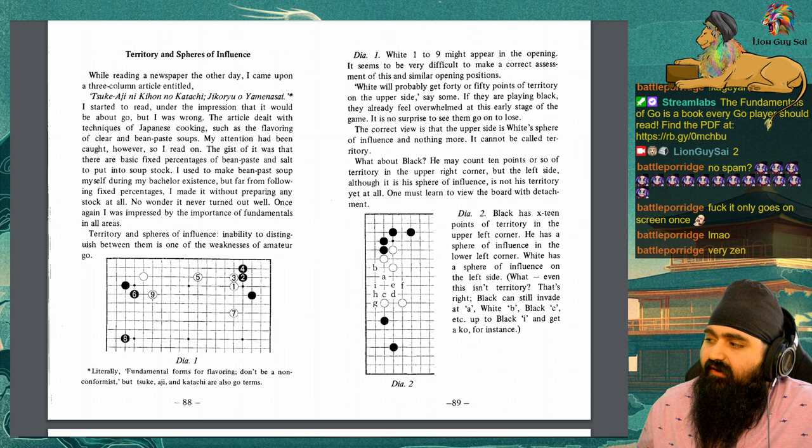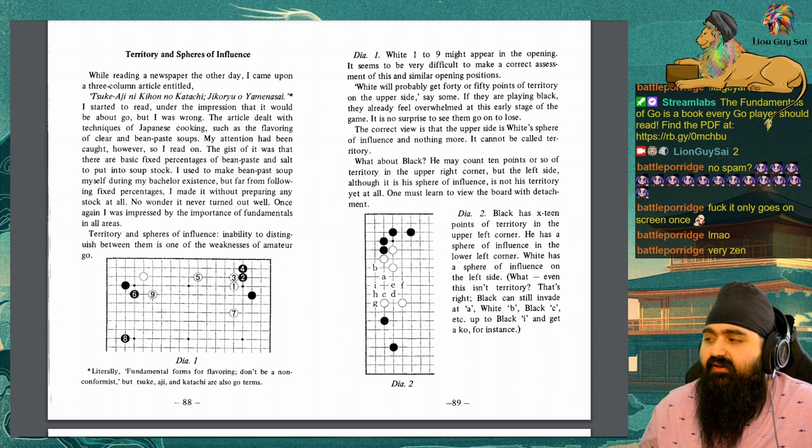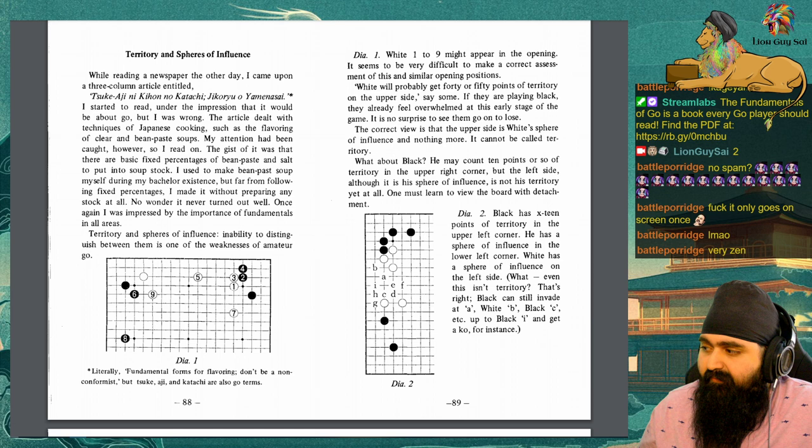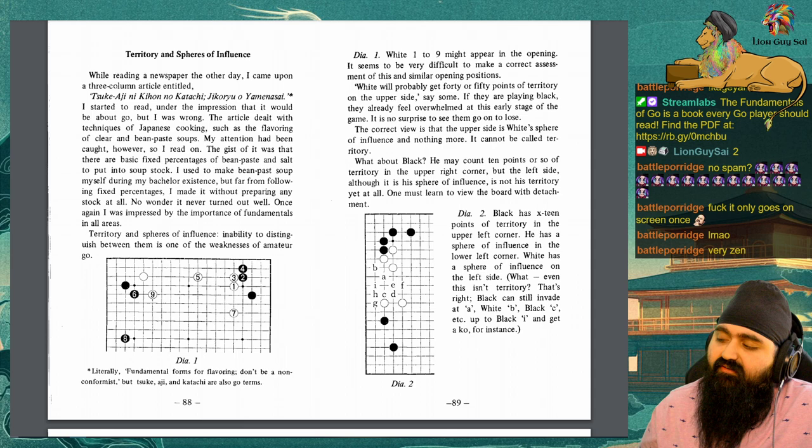Diagram 2. Black has seventeen points of territory in the upper left corner. He has a sphere of influence in the lower left corner. White has a sphere of influence on the left side. What? Even this isn't territory? That's right. Black can still invade at A, white B, black C, etc., up to black I and get a ko for instance.